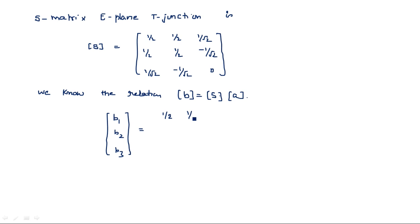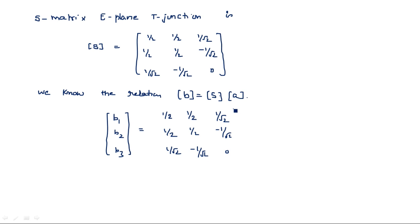The full matrix equation is: [B1, B2, B3] = [1/2, 1/2, 1/√2; 1/2, 1/2, −1/√2; 1/√2, −1/√2, 0] times the column vector [A1, A2, A3].